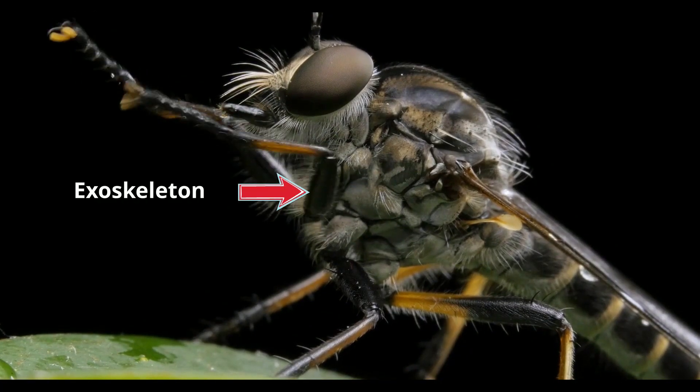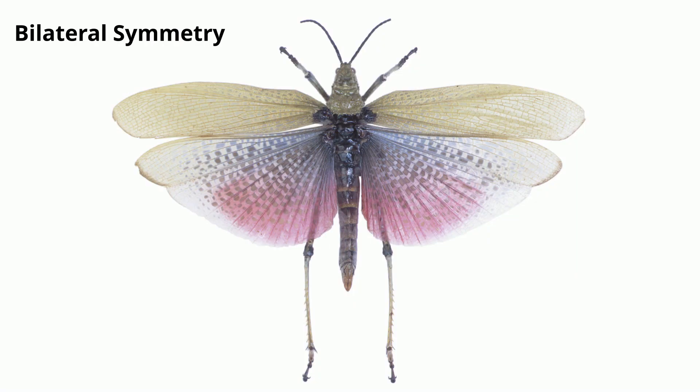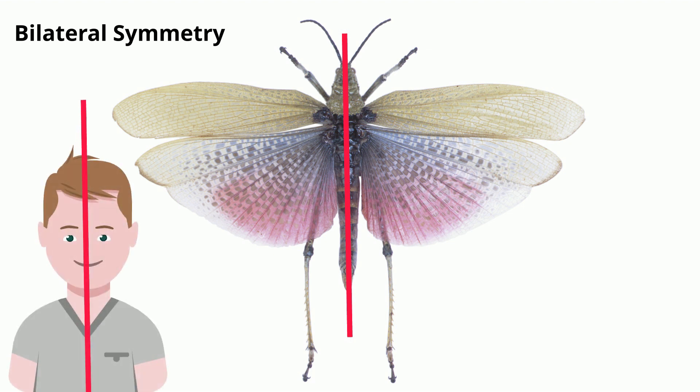Bilateral symmetry. All Arthropods have bilateral symmetry. This means that if you draw a line down the middle of their bodies, both sides will be identical to one another. Humans also have bilateral symmetry.